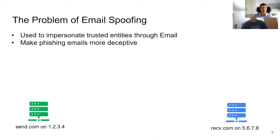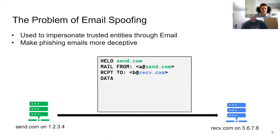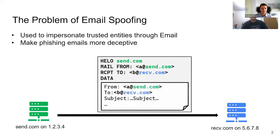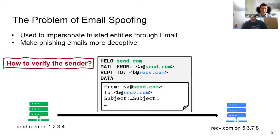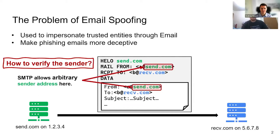Here we have two email servers: send.com and receive.com. For send.com to deliver an email, it initiates an SMTP conversation. It informs the receiving end of the source and destination mailboxes with MAIL FROM and RCPT TO commands. The email message itself is then transmitted with the DATA command, which also has FROM and TO fields indicating who is writing to whom. It turns out there is no way to verify the sender with the SMTP protocol itself, because everything is delivered in plain text and the sender can put in whatever they specify in all the fields.